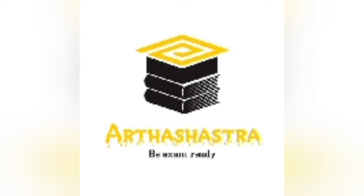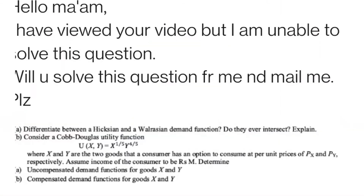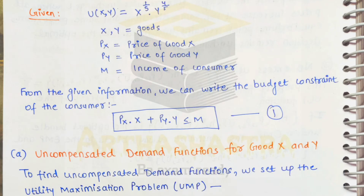Hello everyone, welcome to my channel Earth Shastra Classes. This is a requested video — one of our subscribers requested me to provide the solution of this question. We are given the utility function U, a function of x and y, where x and y are the two goods the consumer consumes. The function is x raised to the power 1/5 into y raised to the power 4/5 — it's a Cobb-Douglas utility function. We are given px as the price of good x, py as the price of good y.